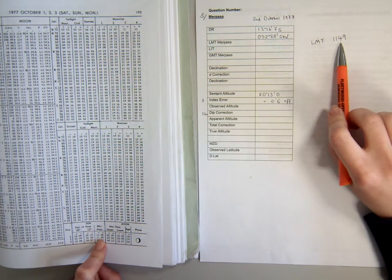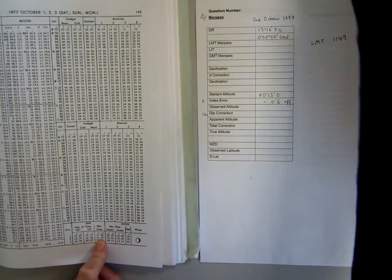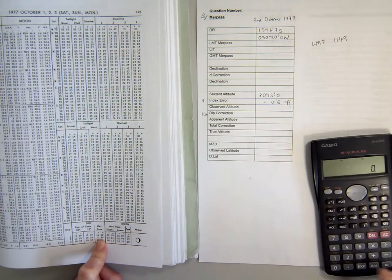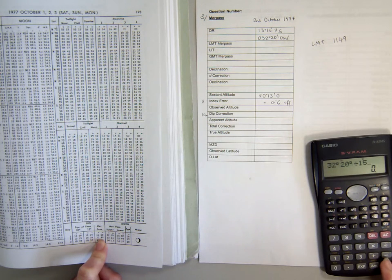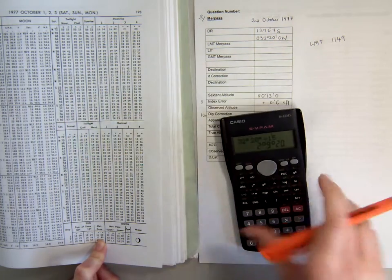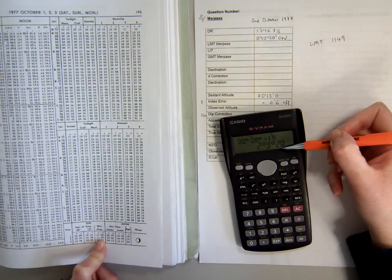So the simplest way for the Sun would be to get that LMT and then with the longitude you've been given in the question in this case 32 degrees 20 west divide that by 15 and you end up with 2 hours 9 minutes and 20 seconds.